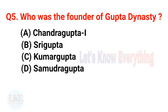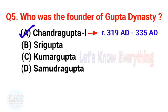Question 5: Who was the founder of Gupta dynasty? Options: A — Chandragupta I, B — Sri Gupta, C — Kumar Gupta, D — Samudragupta. The right answer is option A, Chandragupta I, who is considered the real founder and reigned from 319 AD to 335 AD. Note: if Chandragupta I is not in the options and Sri Gupta is present, then Sri Gupta is the answer — he was the father of Ghatotkacha and grandfather of Chandragupta I.